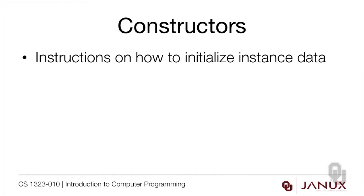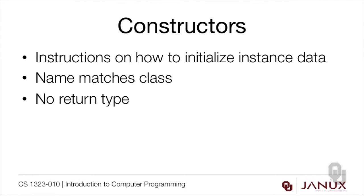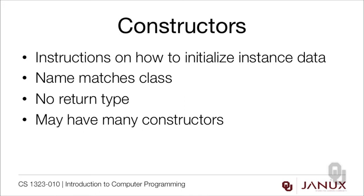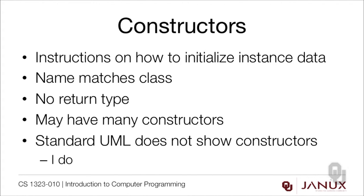The next thing we need to implement are constructors — instructions on how to initialize instance data. We've been using constructors for a while, but now we're writing our own. The name of the constructor always matches the class name, and there's no return type. A really easy mistake is to accidentally put a return type on a constructor. Eclipse cannot identify it as a syntax error — it will just put a little yellow warning flag up, so don't ignore those. Typically classes have many constructors, and having a lot of constructors is generally a good thing.